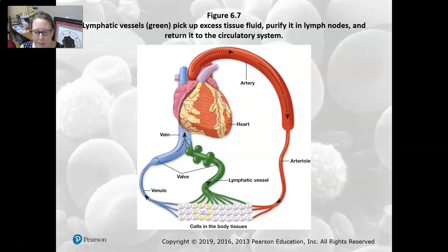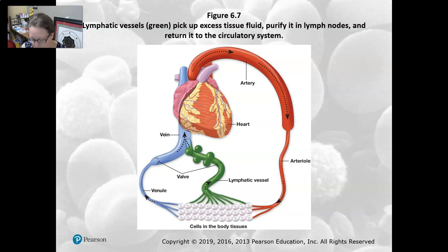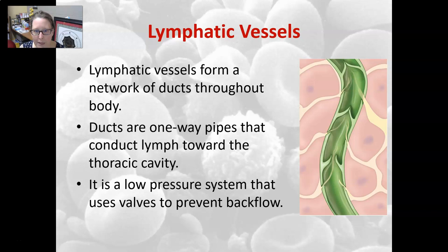What is not returning to the venules and veins will enter the lymphatic capillaries and the lymphatic circulation, which will join up with the venous circulation and return back to the heart. If all goes well, the amount of blood that leaves the heart is equal to the amount of blood that enters the heart, volume-wise.